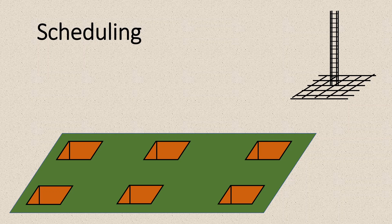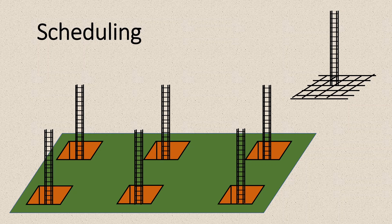If these two activities are done together in parallel, once both are completed you can place the columns in their respective places and pour the concrete. However, shuttering for the columns is a task that can only be started after the columns are placed — it cannot be done in parallel and is dependent on the previous activities. This is how you identify different activities and their interdependence — whether an activity is dependent on another or independent — and those things are to be identified at the beginning.